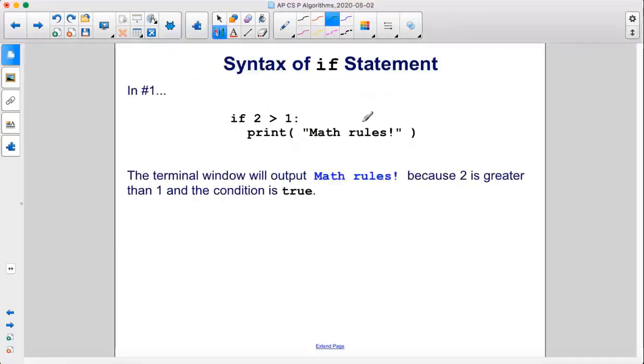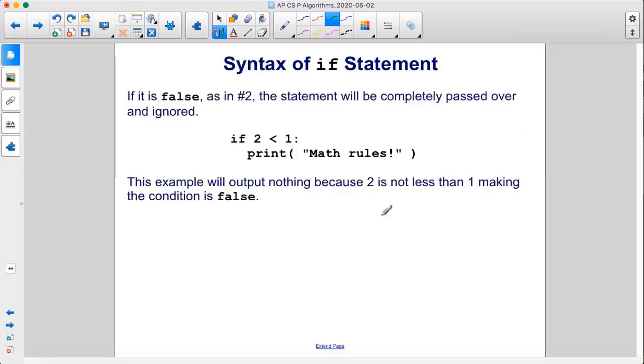In number 1, the terminal window will output math rules because 2 is greater than 1 and the condition is true. If it is false, as in number 2, the statement will be completely passed over and ignored. This example will output nothing because 2 is not less than 1, making the condition false.